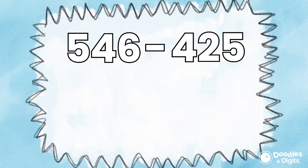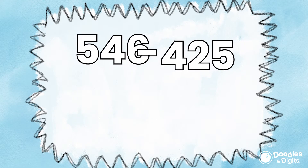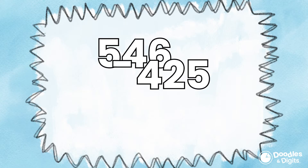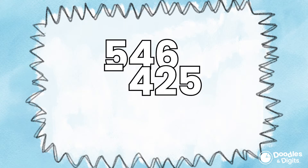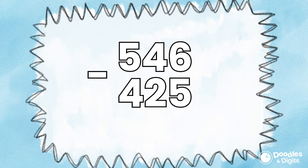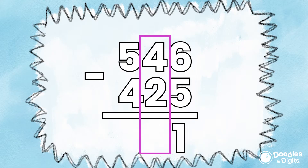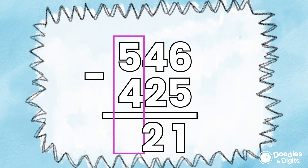Let's look at this problem: 546 minus 425. In the standard subtraction algorithm, you're going to line the two numbers up on top of one another and make sure that each place value is aligned. We're going to start in the ones place value. 6 minus 5 equals 1, 4 minus 2 equals 2, and 5 minus 4 equals 1.